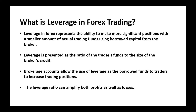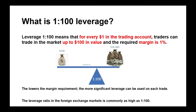Leverage is presented as the ratio of the trader's funds to the size of the broker's credit. Brokerage accounts allow the use of leverage as borrowed funds to traders to increase trading positions. And leverage ratio can amplify both profits and losses. But this is so complicated for traders. When we want to define 1 to 100 leverage, using this definition: leverage 1 to 100 means that for every dollar in the trading account, traders can trade in the market up to $100 in value, and the required margin is 1%.